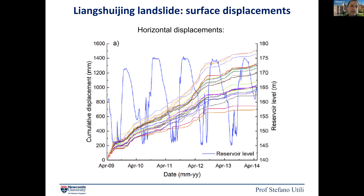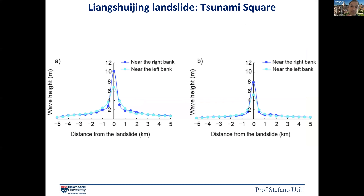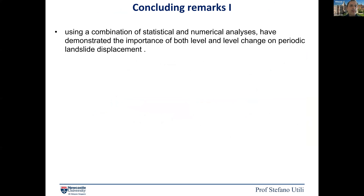The maximum wave heights in the navigation channel — on both the right and left bank — show that while the global failure wave is larger, the local failure wave is not much smaller, despite involving only the shallower portion of the landslide splashing into the water.